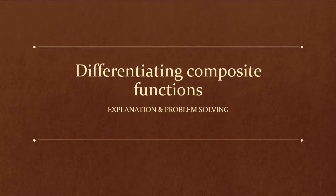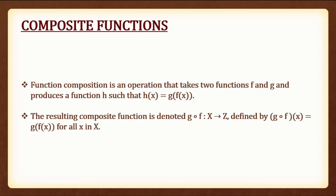The first thing we are going to look at is differentiating composite functions. In order to differentiate composite functions, we must first look at what a composite function actually is. Function composition is an operation that takes two functions f and g and produces a function h such that h of x is equal to g of f of x. The resulting composite function is denoted as g composition f from x to z, defined by g composite f of x is equal to g of f of x for all x belonging to x.